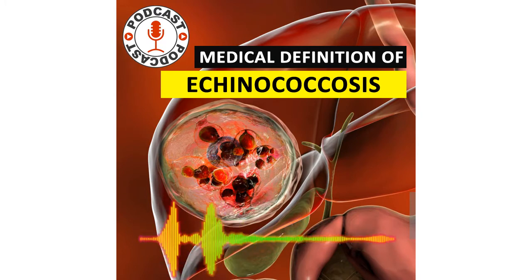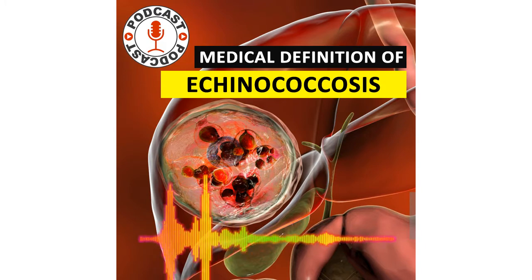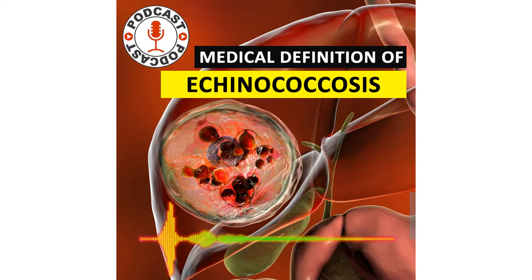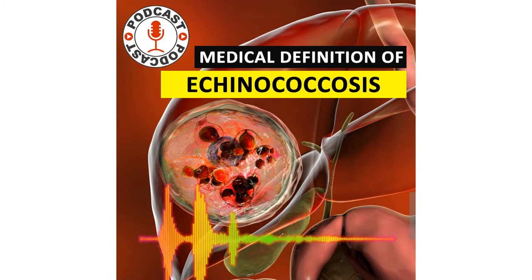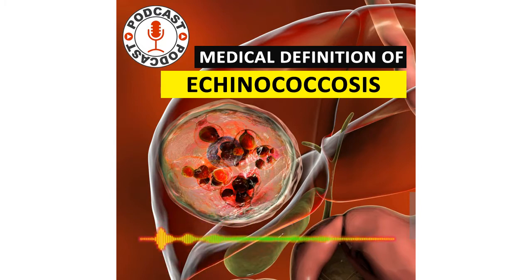Echinococcus granulosus is common in areas where livestock is raised in association with dogs, including Australia and New Zealand, Argentina and Chile, Africa, Europe, the Middle East, and the Mediterranean region, especially Lebanon and Greece. It causes unilocular cysts.